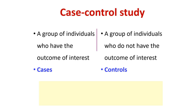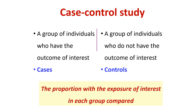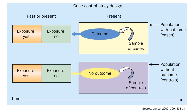In a case-control study we identify a group of individuals who have the outcome of interest — we call them cases. We also identify a group of individuals who do not have the outcome of interest — we call them controls. Then we compare the proportion with the exposure of interest among the cases and controls.